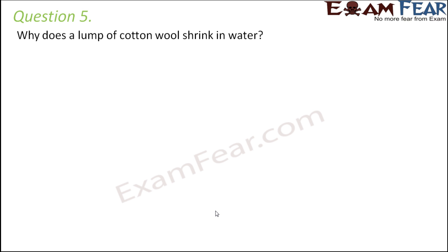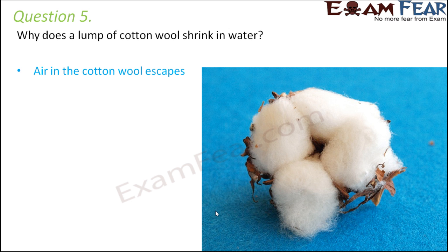Question number five: why does a lump of cotton wool shrink in water? When you look at a cotton wool it seems very big, but there are a lot of spaces within it where air is present. As soon as we dip it in water, the air in the cotton wool escapes, and it becomes very small because the big size is due to the air trapped within it.